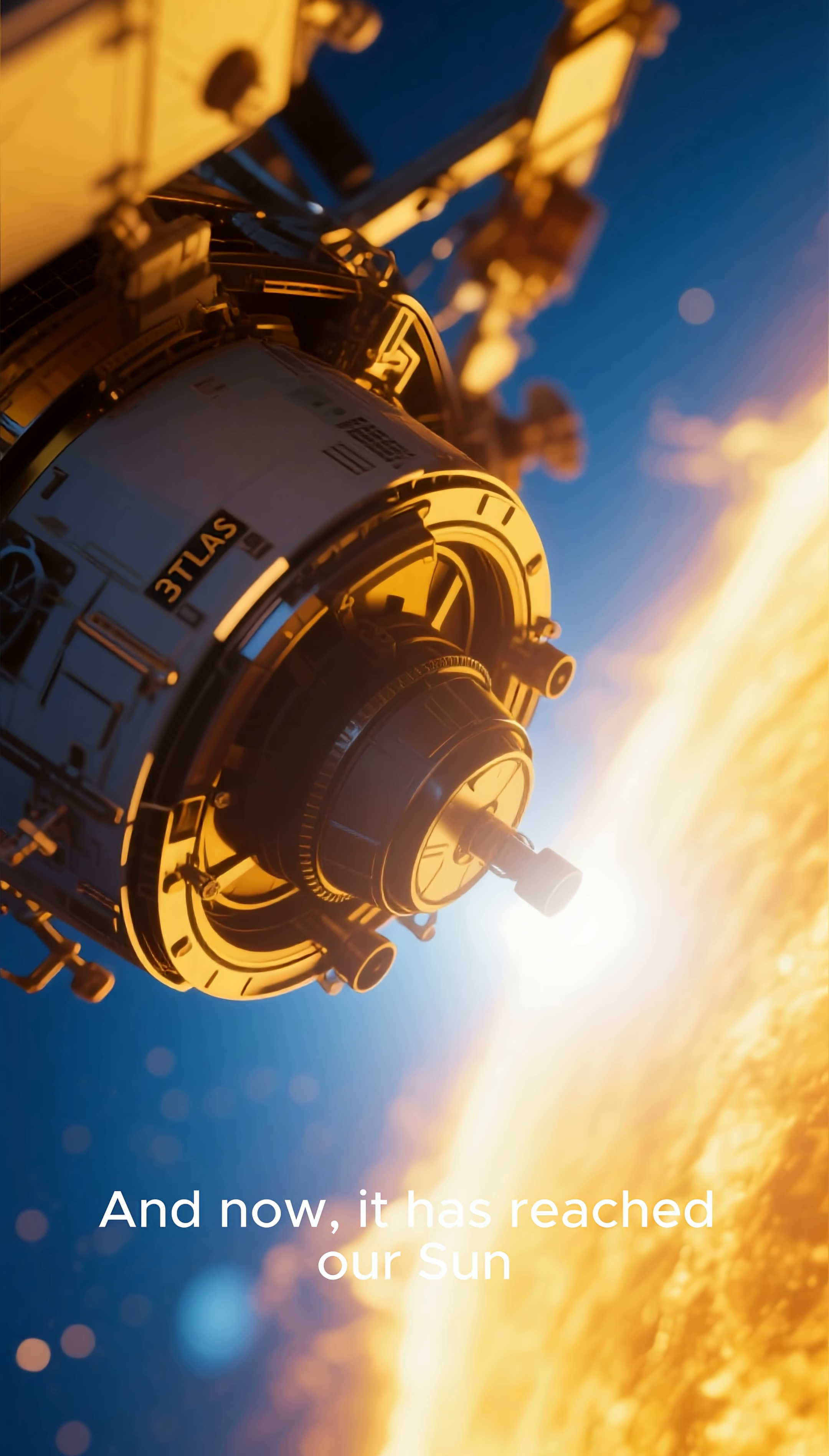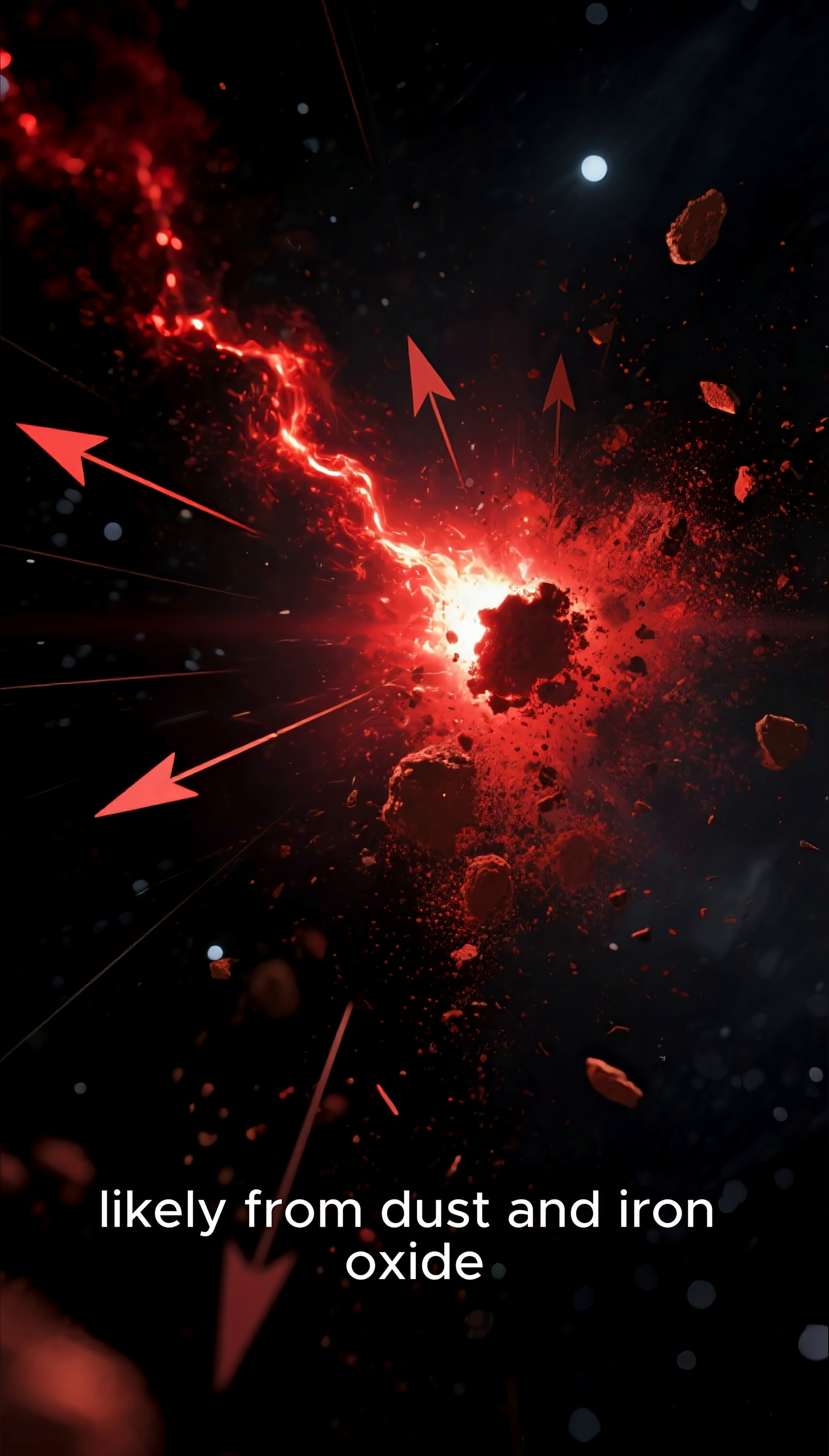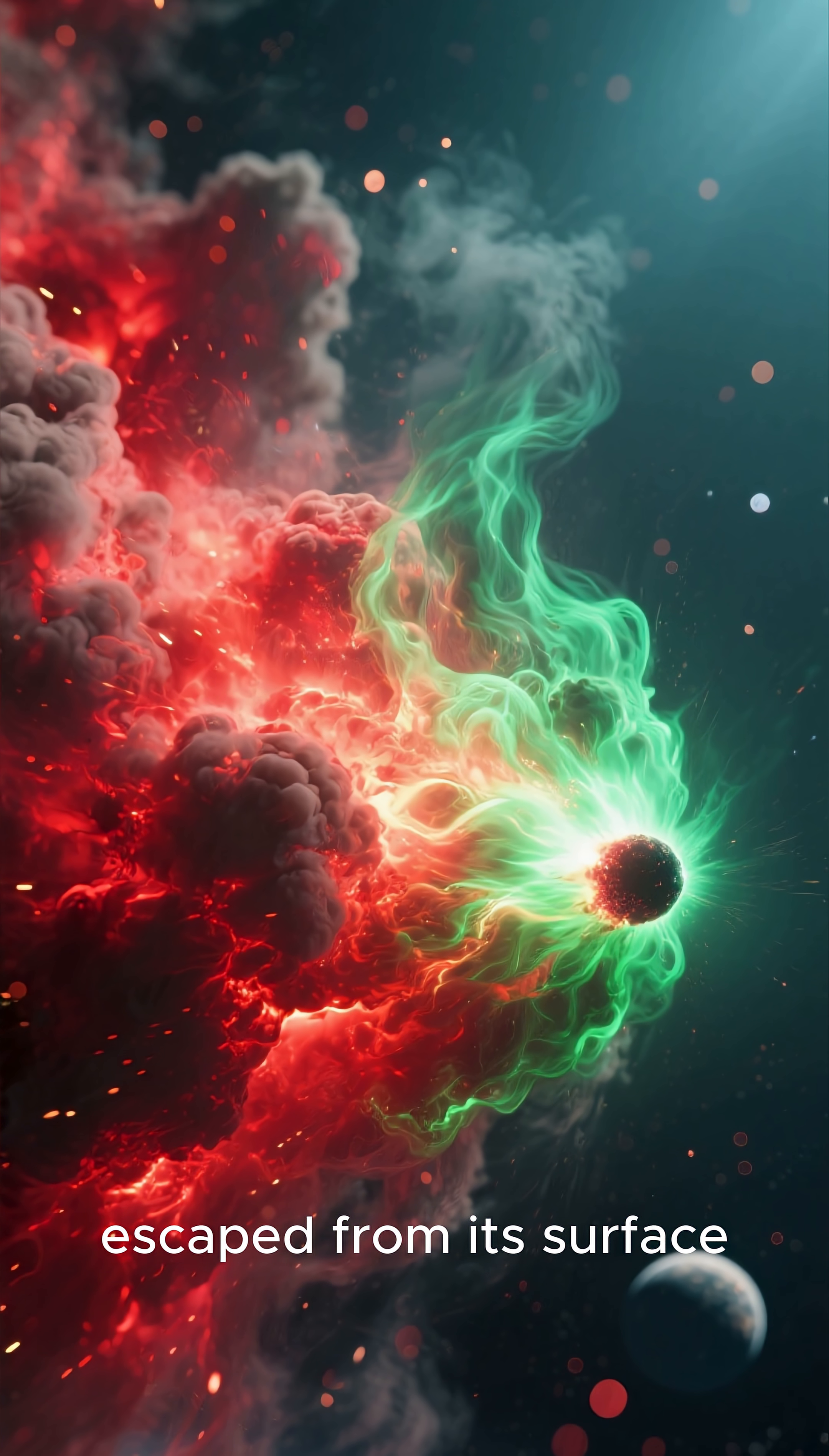And now it has reached our sun. At first it glowed red, likely from dust and iron oxide. Then, weeks later, it turned green as gases like dicarbon and cyanide escaped from its surface.